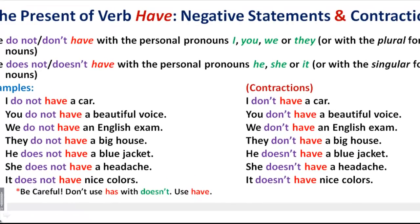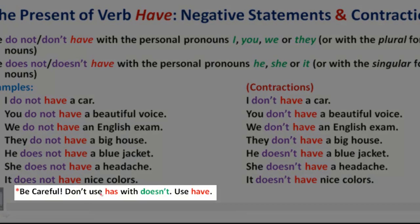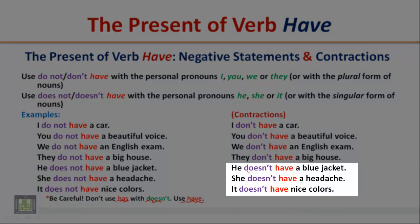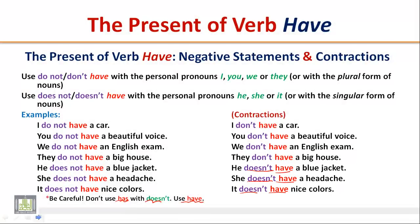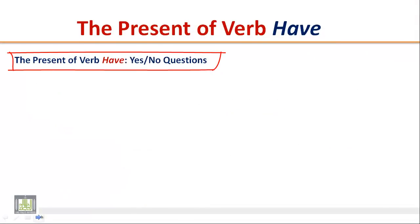Be careful: do not use 'has' with 'doesn't.' Use 'have' instead. After the auxiliary 'doesn't,' we use the base form 'have.'